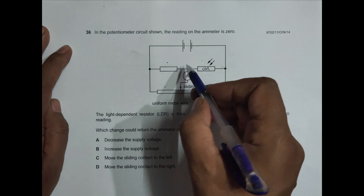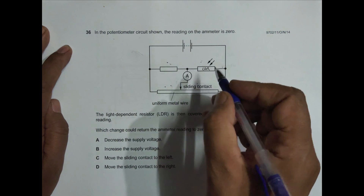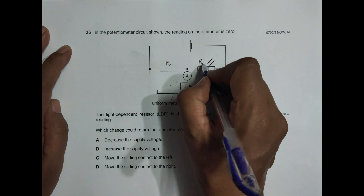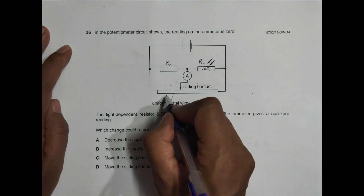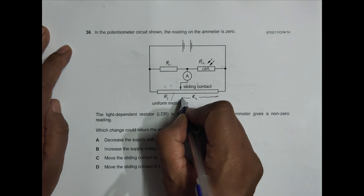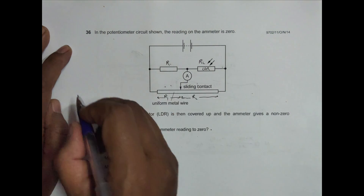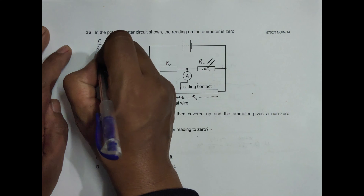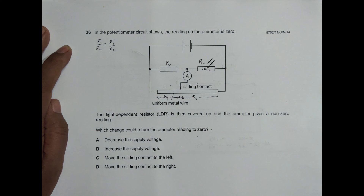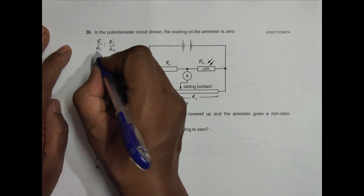We cannot simply say the ratio of these two resistances equals the ratio of those two. Let me label the components: this resistance is R, the LDR resistance is R_L, and the other two resistances are R1 and R2. For balance, we must have R divided by R_L equal to R1 divided by R2.